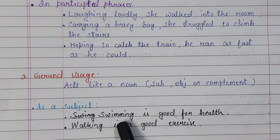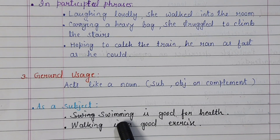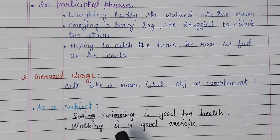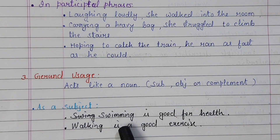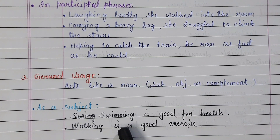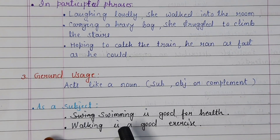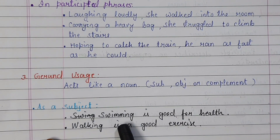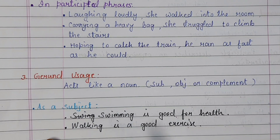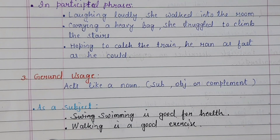Present participle acts as an adjective or part of a verb tense. But when the ing form of a verb acts as a noun, it is a gerund. Swimming here takes the position of subject, so swimming is a gerund. 'Walking is a good exercise.' Walking is a gerund because walking is the subject of the sentence.